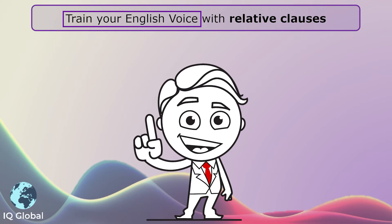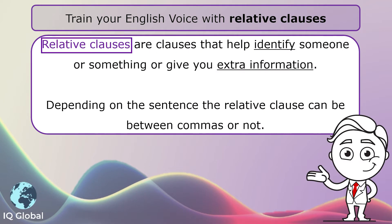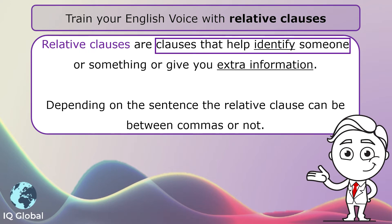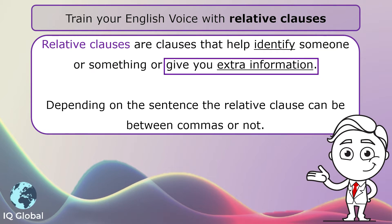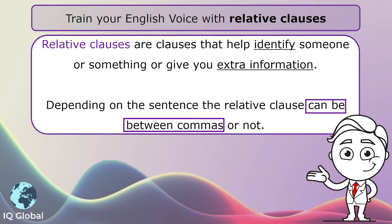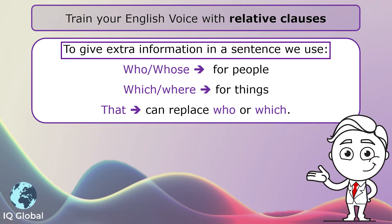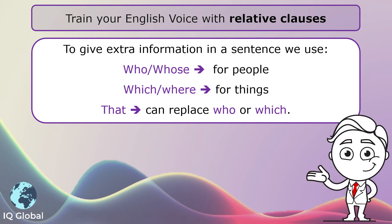Train Your English Voice with Relative Clauses. Relative clauses are clauses that help identify someone or something, or give you extra information. Depending on the sentence, the relative clause can be between commas or not. To give extra information in a sentence, we use who or whose for people, which or where for things, and that can replace who or which.